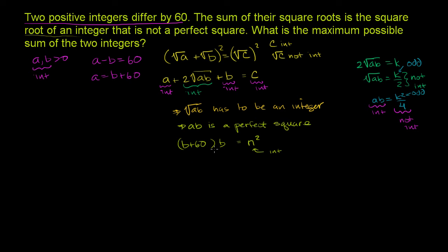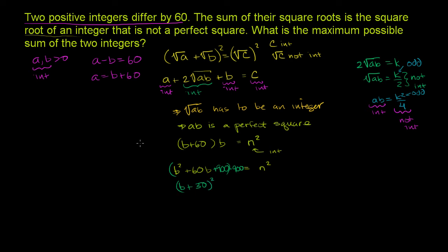Let's play around with this and put some constraints on what we're doing. If you multiply it out, you get b² + 60b = n². We can complete the square: take half of 60, which is 30, and square it — that gives 900. So we add and subtract 900, giving us b² + 60b + 900 - 900 = n². This part becomes (b + 30)² minus 900 equals n².